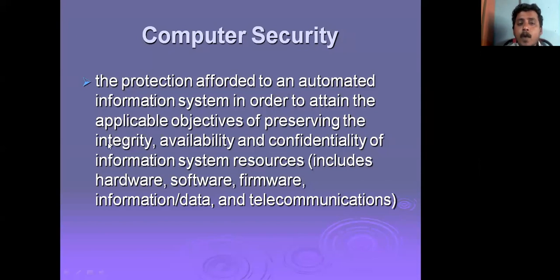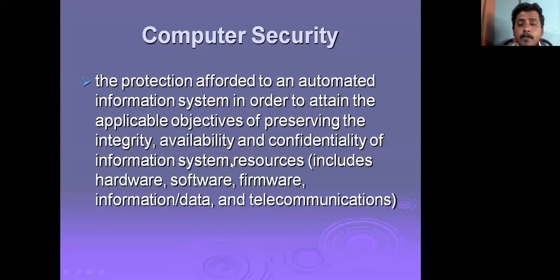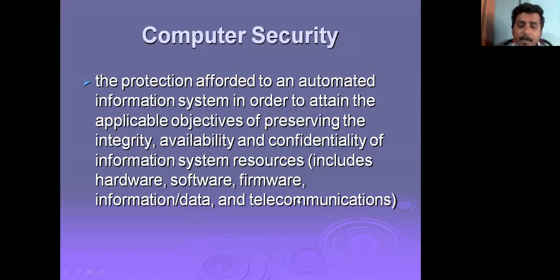Any unauthorized modifications to the system or the system resources is called a breach of integrity. That's why one objective is preserving the integrity of the information system resources. Examples of resources include hardware, software, firmware, information, as well as telecommunications — all of these are information system resources.